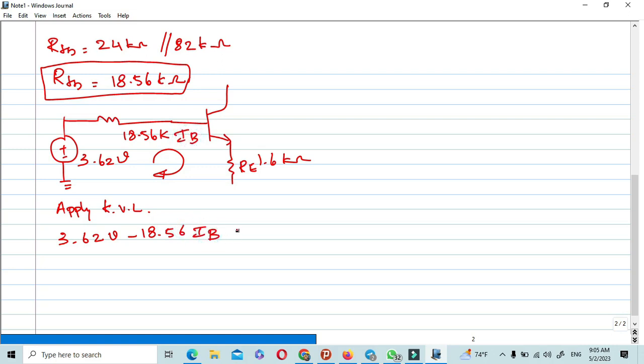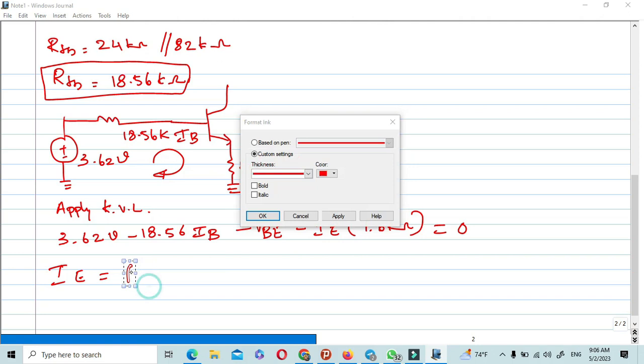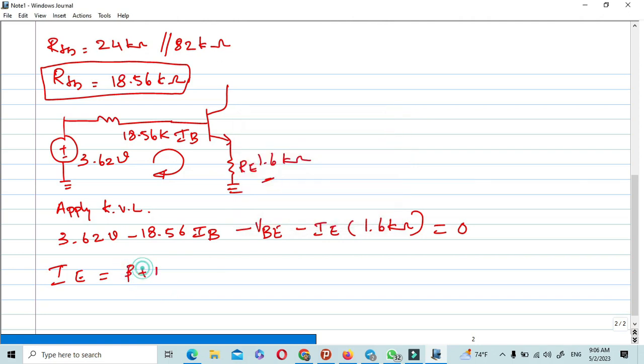This is for IB minus VBE minus IE times 1.6 kiloohms equals zero. Already we know IE equals beta plus 1 into IB. So finally, IB equals IE over beta plus 1. This relation we are going to use here wherever IB is available.